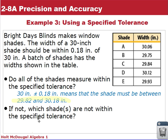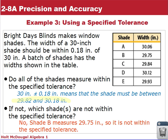Looking over the measurements there, we can see that that's not the case for all of them. So no, shade B measures 29.75, so it's not within the specified tolerance.